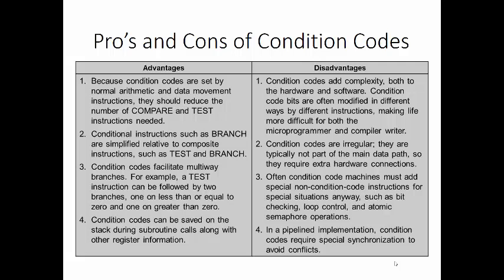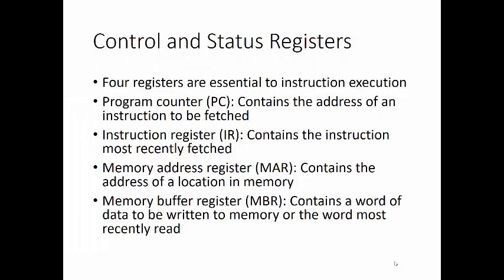Let's turn our attention to the control and status registers. Four registers are essential to instruction execution. One is the program counter, which contains the address of the instruction to be fetched. Second is the instruction register, which contains the instruction that has been most recently fetched. Memory address register contains the address of the location of memory. And the memory buffer register contains a word of data to be written to memory or the word most recently read.